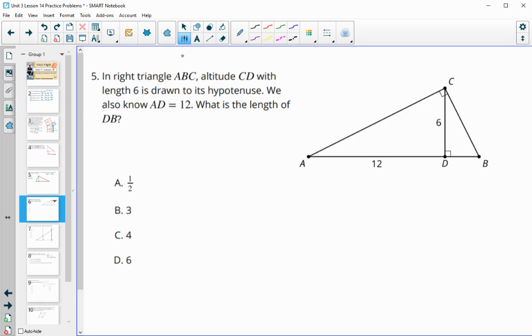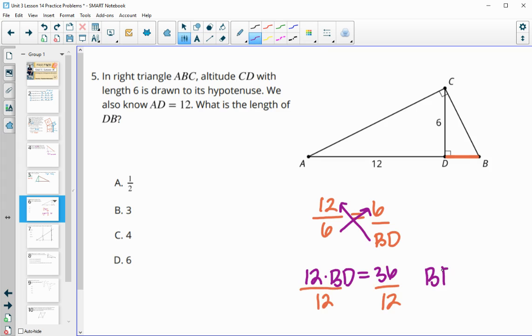Number five, in right triangle ABC, the altitude CD has a length of six, and we also know that AD is 12. What is the length of BD? So we want to find this segment here. We know that the hypotenuse pieces here split up are proportional with the altitude. So we can take 12 over 6, which is going to be equal to 6 over this missing piece here of BD. Then we'll be able to cross multiply. So if we multiply BD up, we get 12 times BD equals 6 times 6, which is 36. Then we will divide both sides by 12, and we end up with BD is equal to 3.